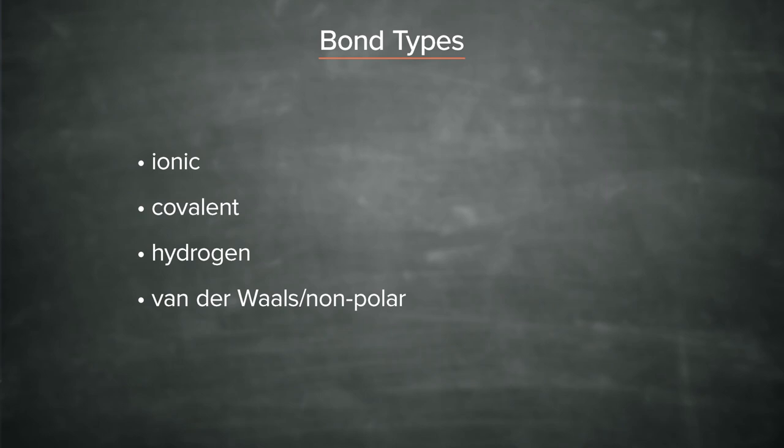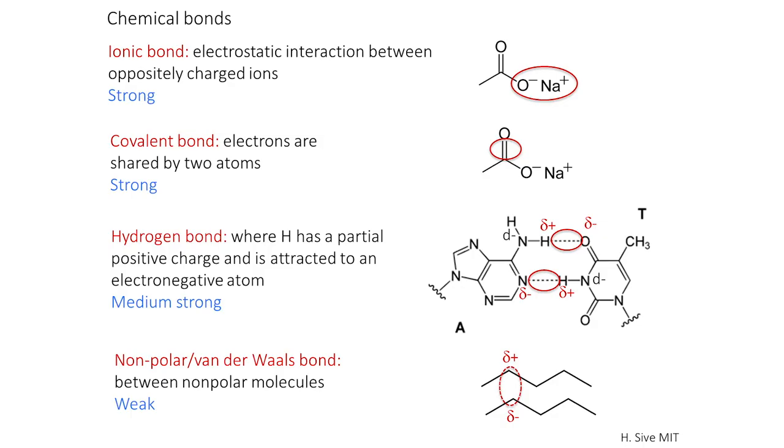From strongest to weakest, the ionic and covalent bonds, and this bottom class are the weakest, with hydrogen somewhere in the middle. So let's take a look at some of these chemical bonds and see what we can say about them.